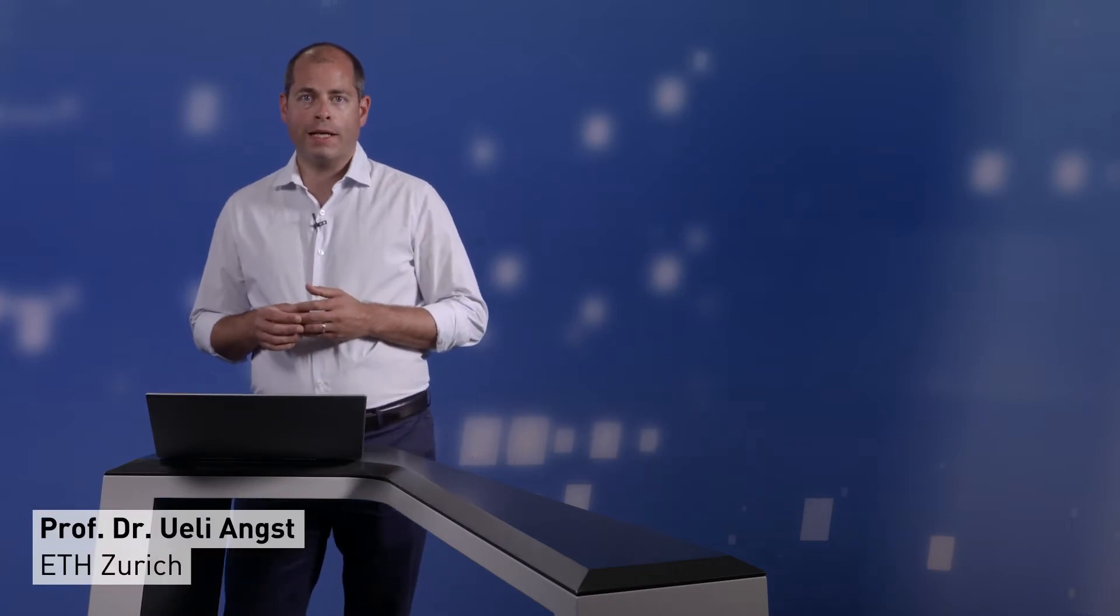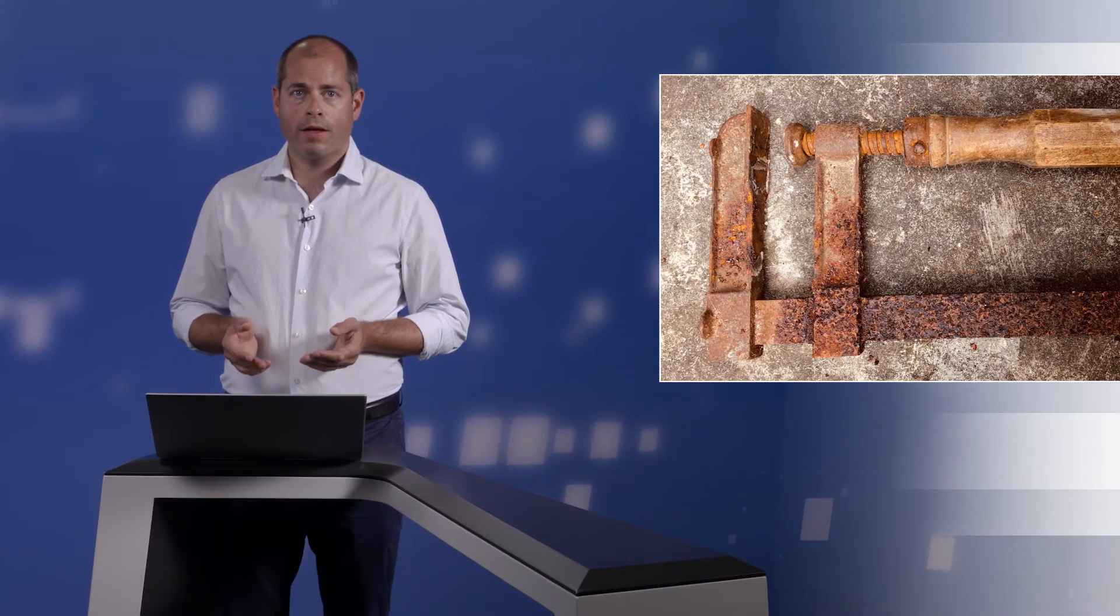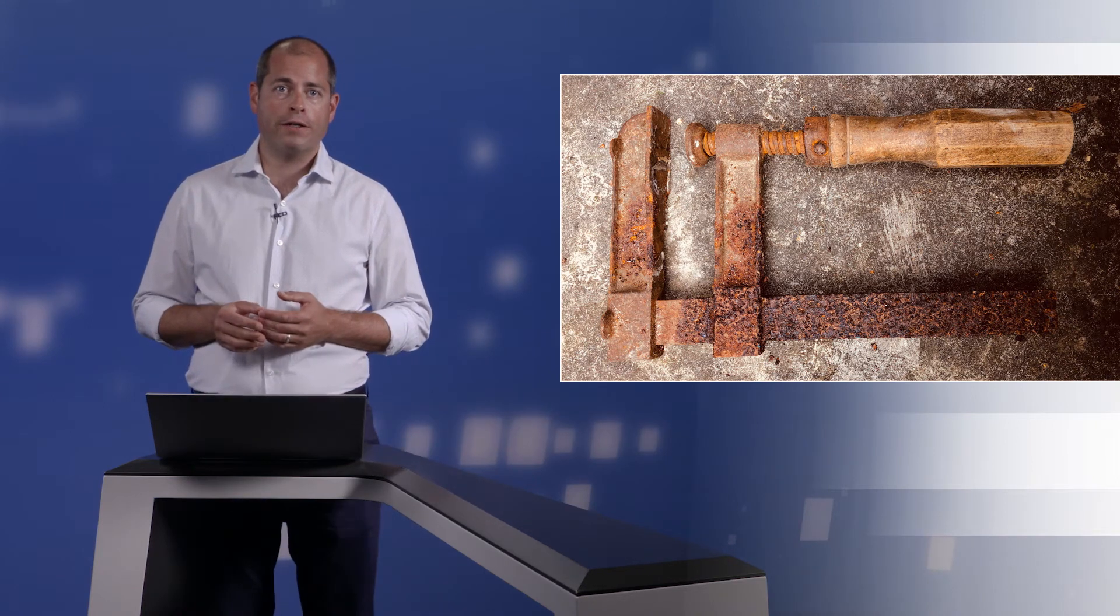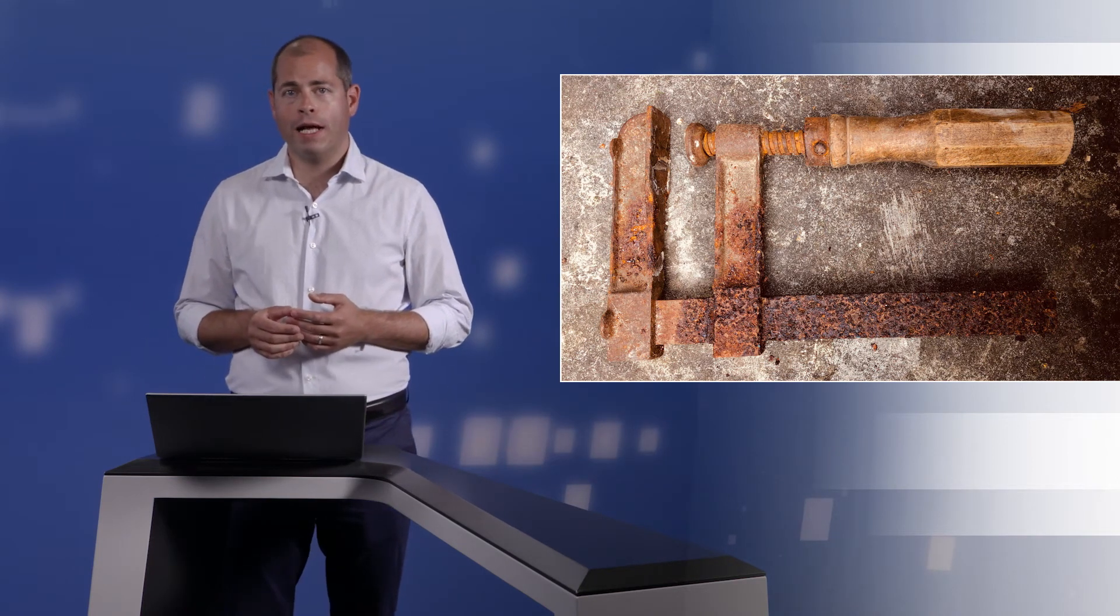Corrosion is the reaction of a metal with its environment, leading to a measurable alteration of the metal properties. This photo shows an example where corrosion has impaired the functionality of a metallic tool.